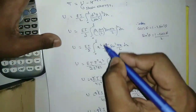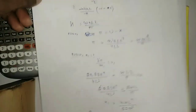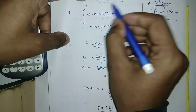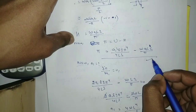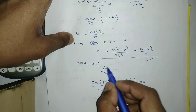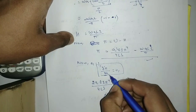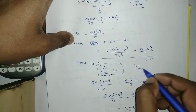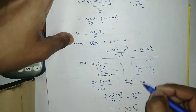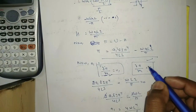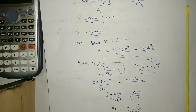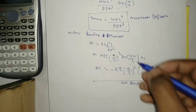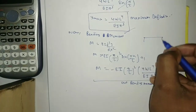This completes our analysis. We have obtained the deflection, maximum deflection, and bending moment for a simply supported beam under UDL using the Rayleigh-Ritz Method with two constants. Thank you.